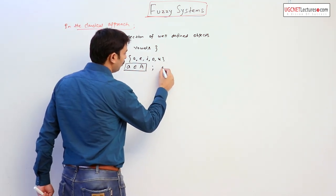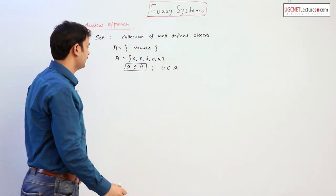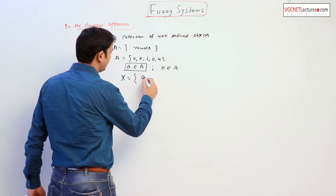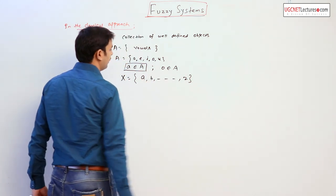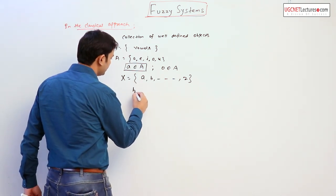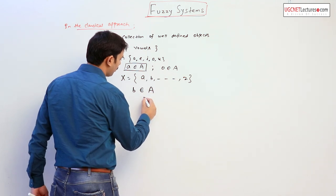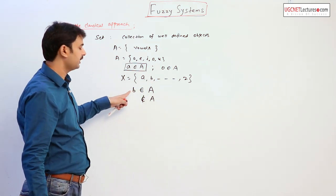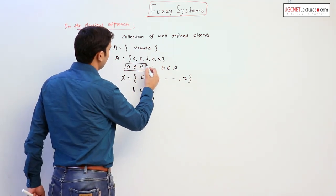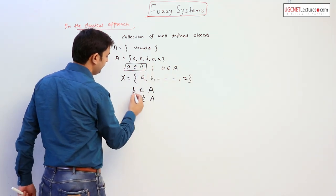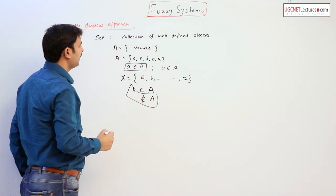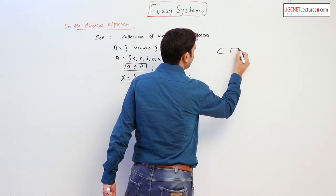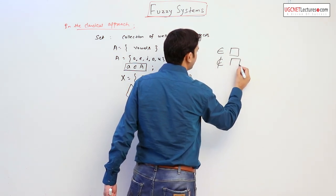Similarly, O belongs to set A. But if you have a universal set X which contains A, B, up to Z — all the alphabets — the question is: does B belong to that set or not? B is also an alphabet, but B is not a vowel, so B does not belong to A. That means, in a set, an element either belongs to that set or does not belong to that particular set.